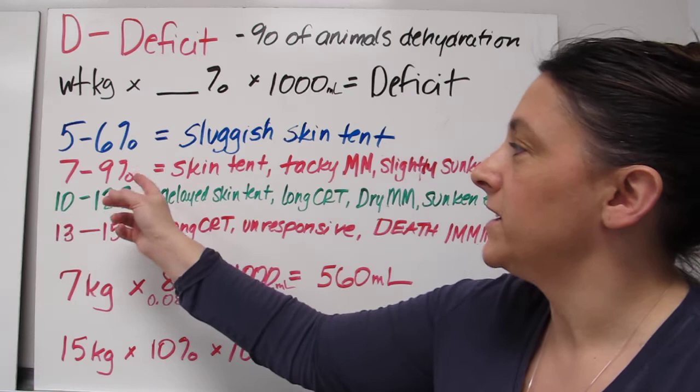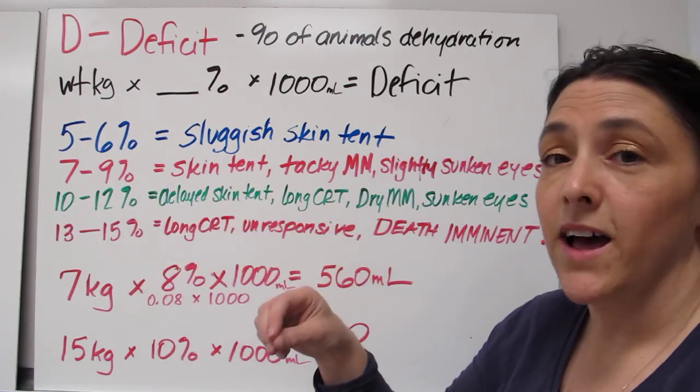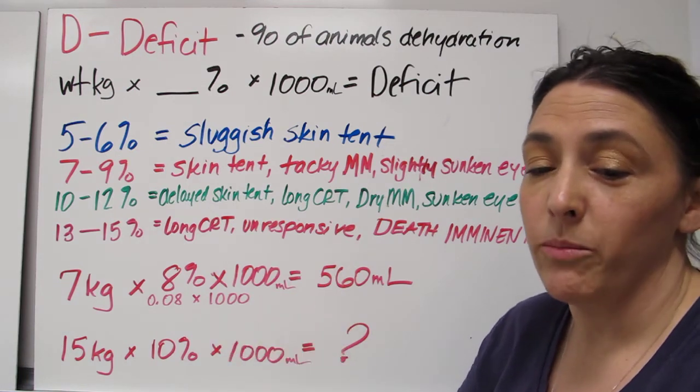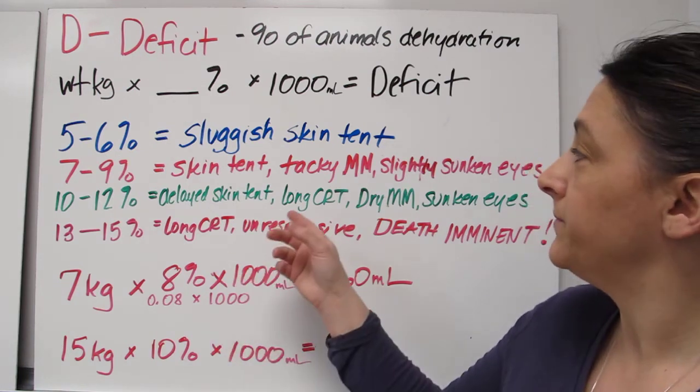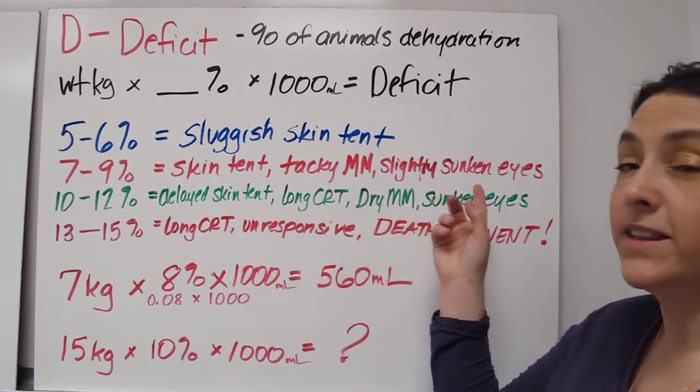At 7 to 9 percent, there's a skin tent that you do. It does not go down as quickly. It usually takes about 3 seconds for it to go back down over the shoulder blades. They have tacky mucous membranes and they are slightly sunken eyes.